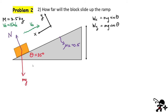Now let's look at Problem 2: how far will the block slide up the ramp? I'm giving it an initial velocity of 15 meters per second. In addition to gravity, I'm also going to add friction between the block and the ramp. That means we must add another force to the free body diagram. This additional force is the force of kinetic friction, F sub K. I can also add the components of the weight to the diagram: the perpendicular component wy and the component along x.